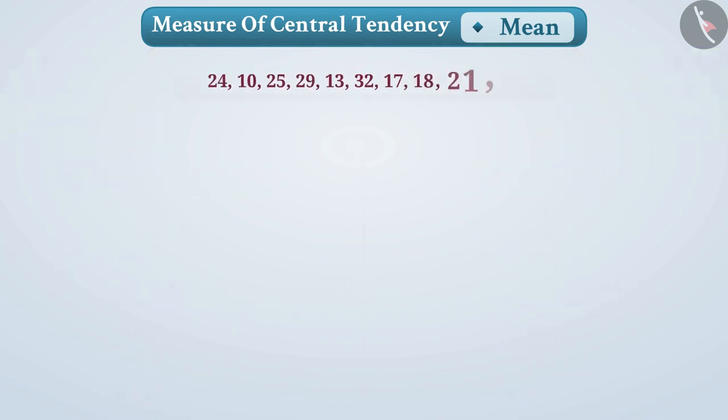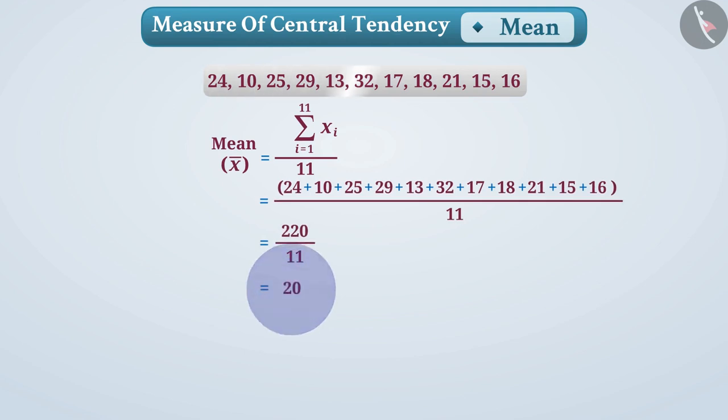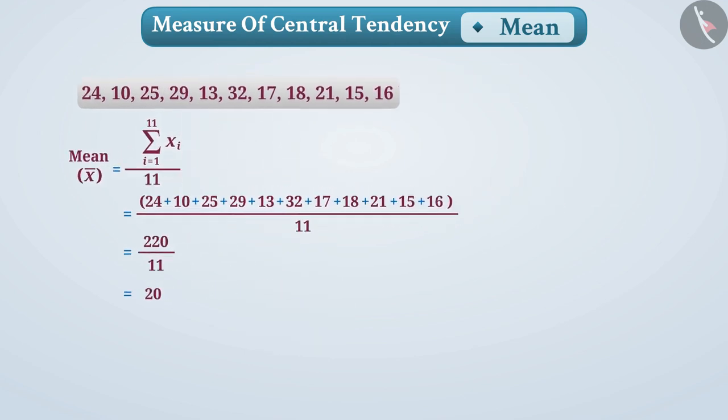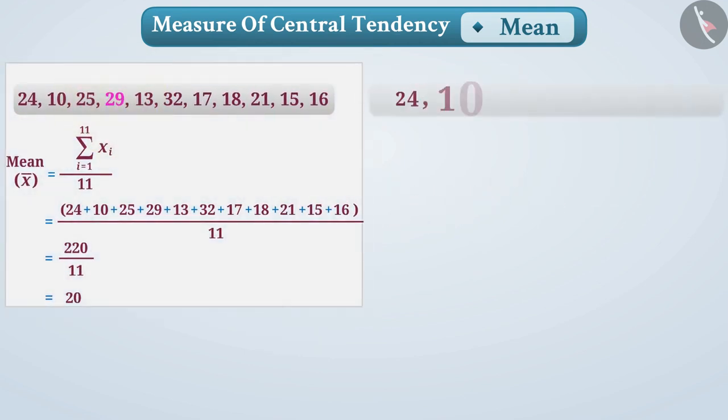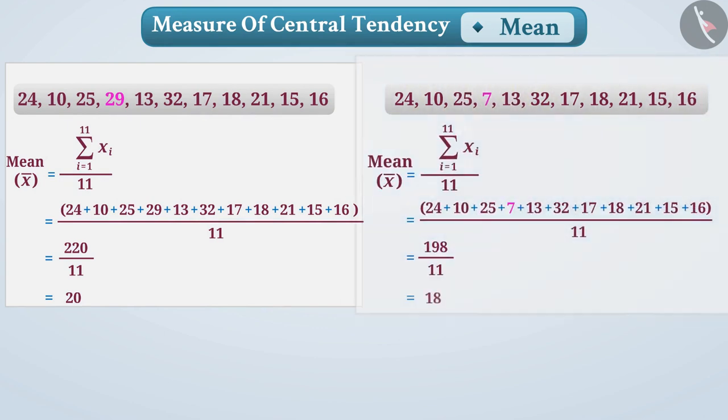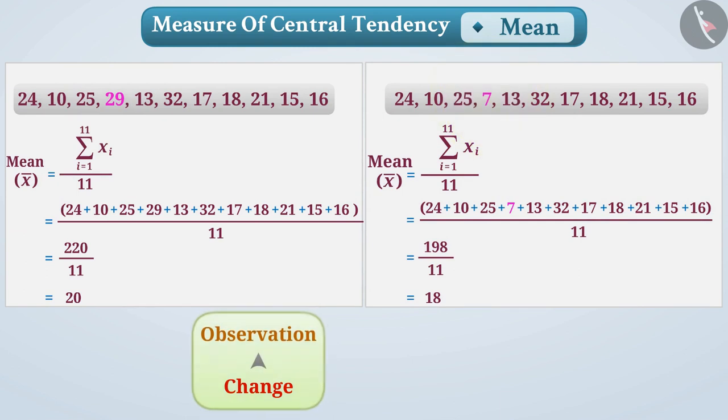Here are some observations. Their mean is 20. If we change the observation 29 and write 7, then with the new observation, mean is 18. In this way, the mean depends on all observations. If there is a change in an observation, then the mean also changes.